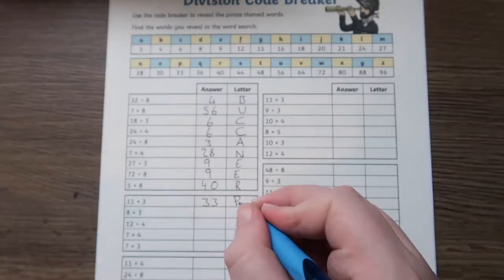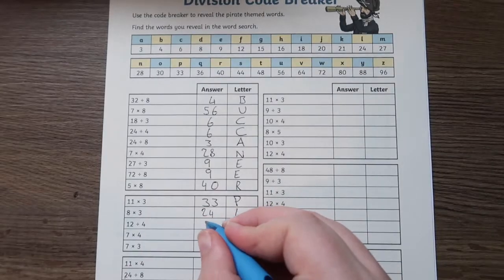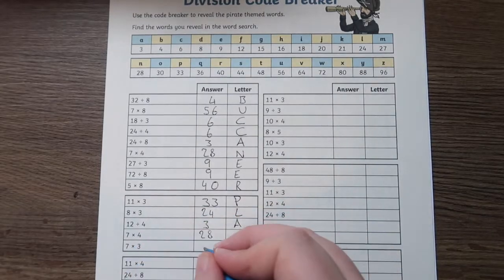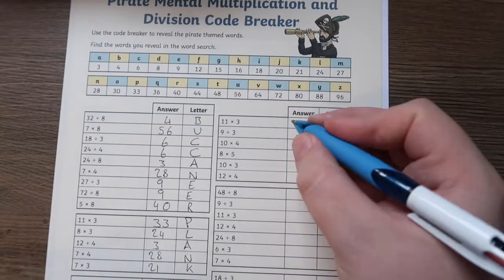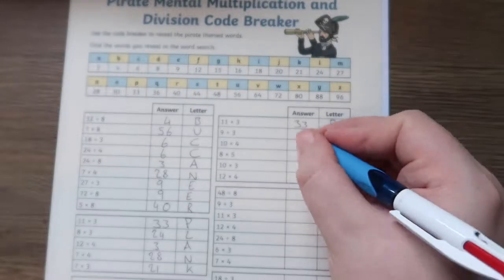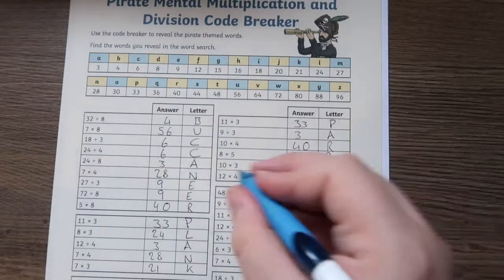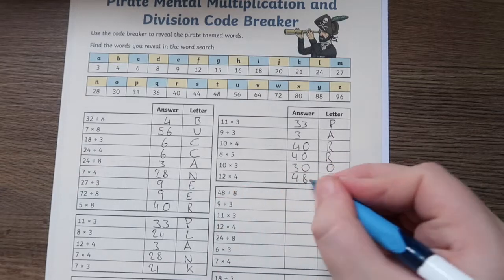Activities cover multiplication and linked division facts for the 3, 5 and 8 times tables for year 3 and all multiplication tables to 12 times 12 for year 4. This resource is perfect for those disengaged learners.